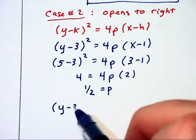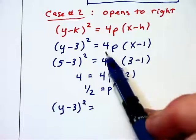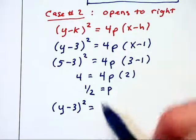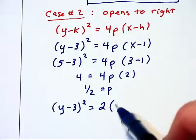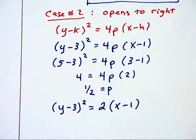So when we have the curve opening to the right, the equation becomes y minus 3 quantity squared equals 4 times 1 half, which is 2, times the quantity x minus 1.